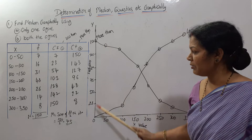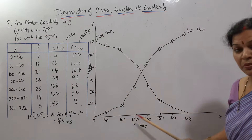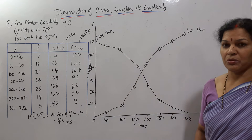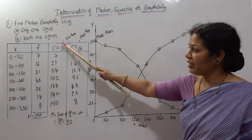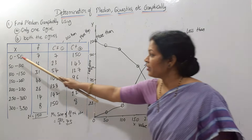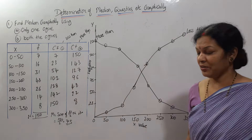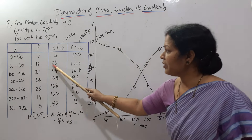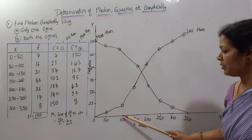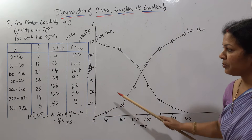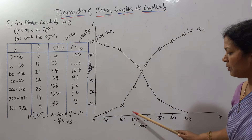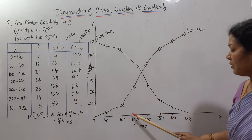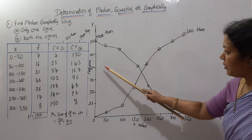Now we draw the less than ogive curve using CF1. The plot points are: (50, 7), (100, 23), (150, 54), (200, 102). For 0–50 the CF is 7; for 50–100 it is 23; for 100–150 it is 54; for 150–200 it is 102. We locate each of these on the graph and mark the points.